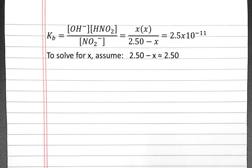Our next step is to solve for X. To solve for X, we can make a simplifying assumption that 2.5 minus X is approximately equal to 2.5. So substituting 2.5 for 2.5 minus X, we'll get X squared divided by 2.5 equals 2.5 times 10 to the negative 11th.